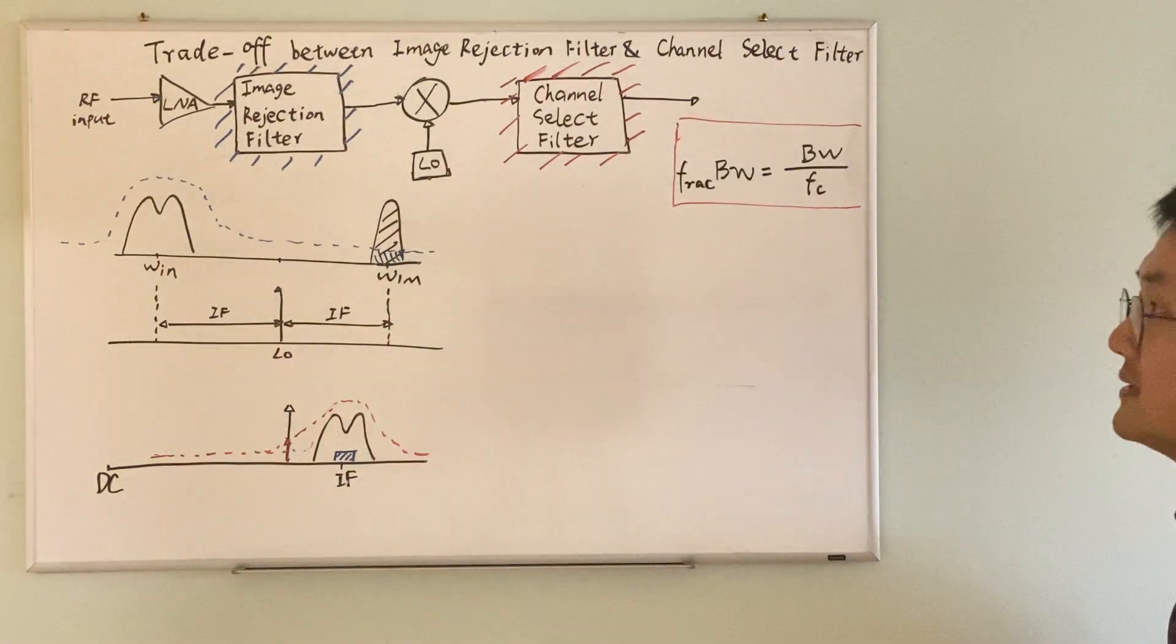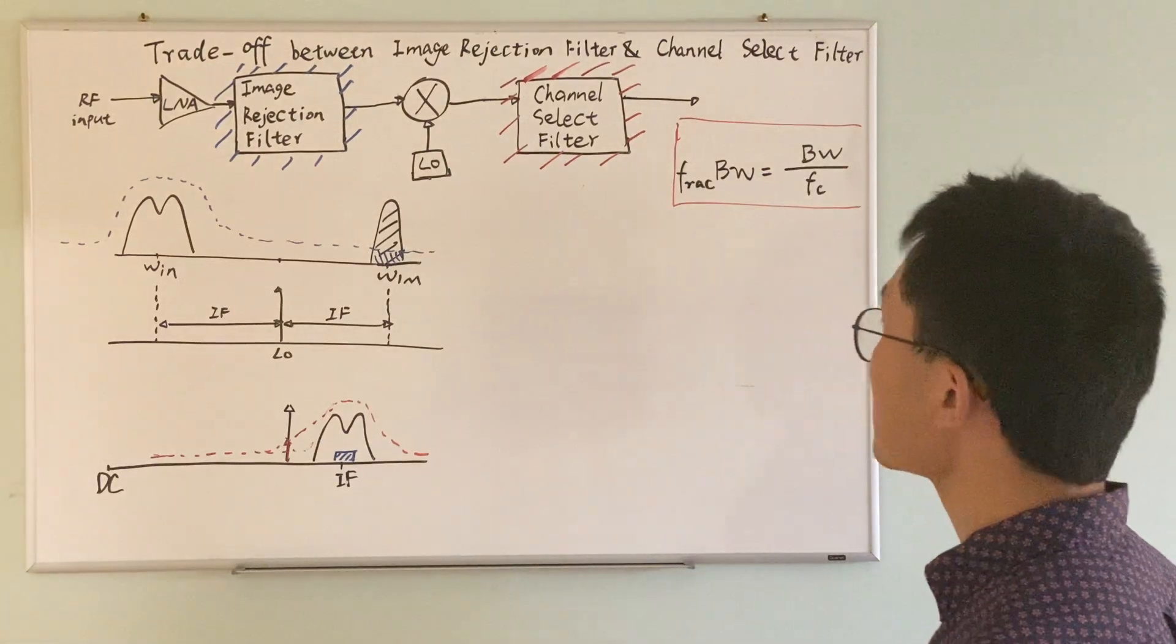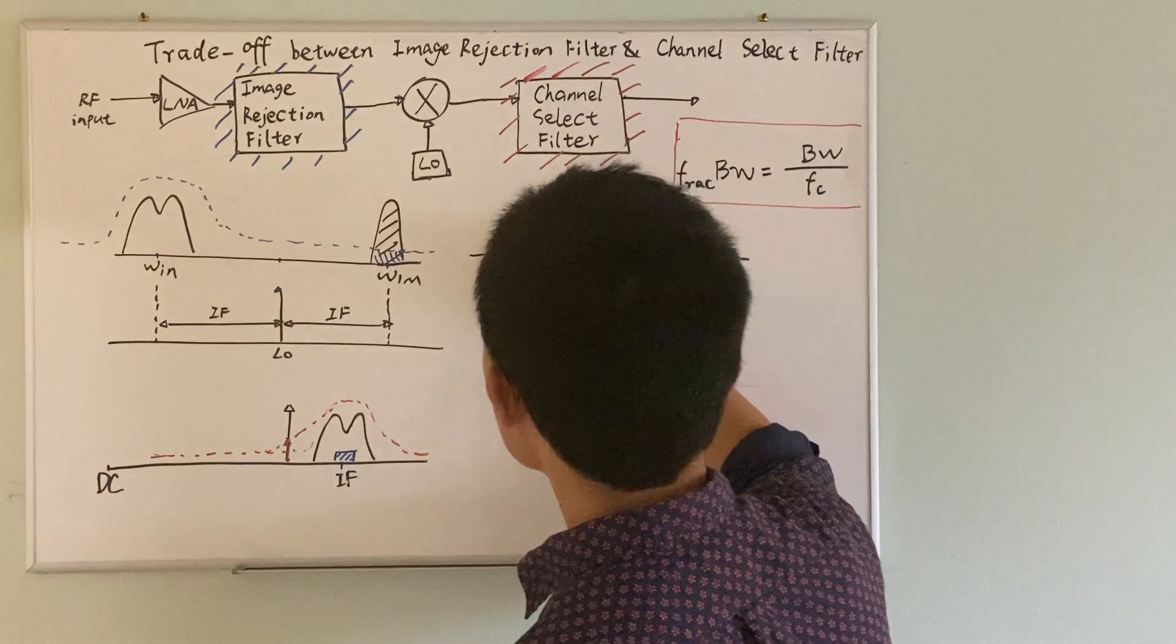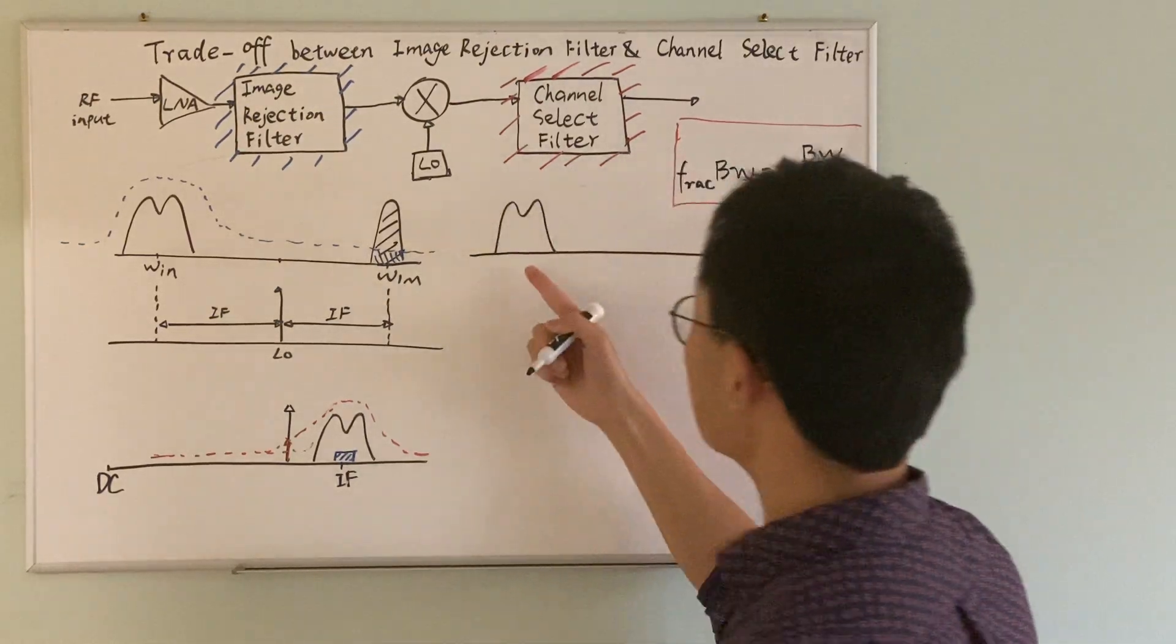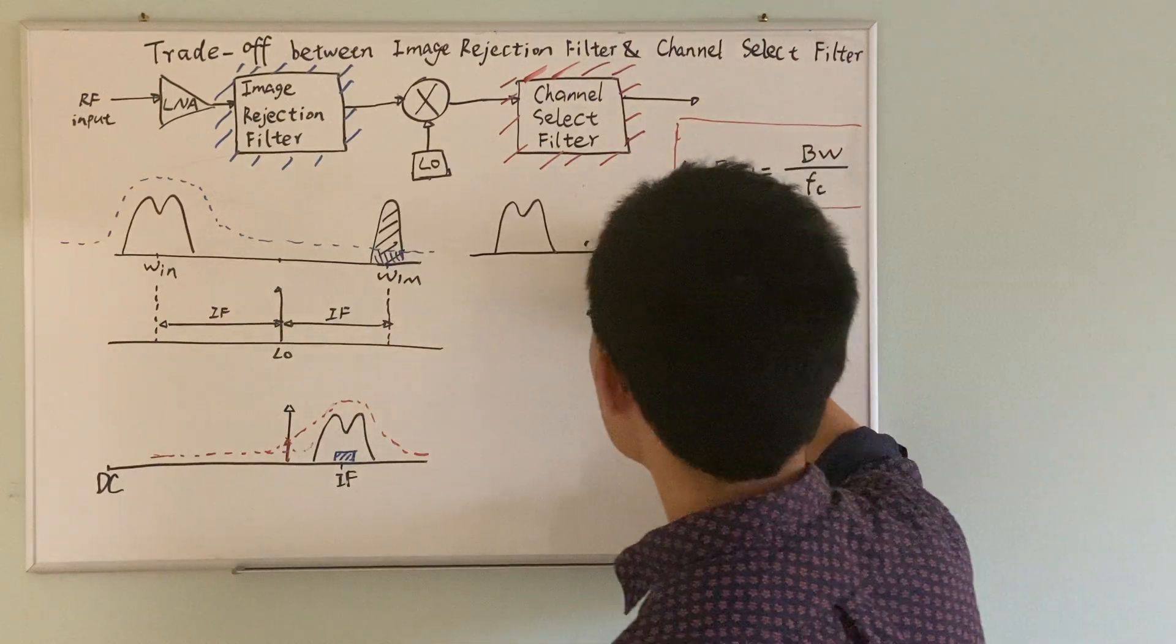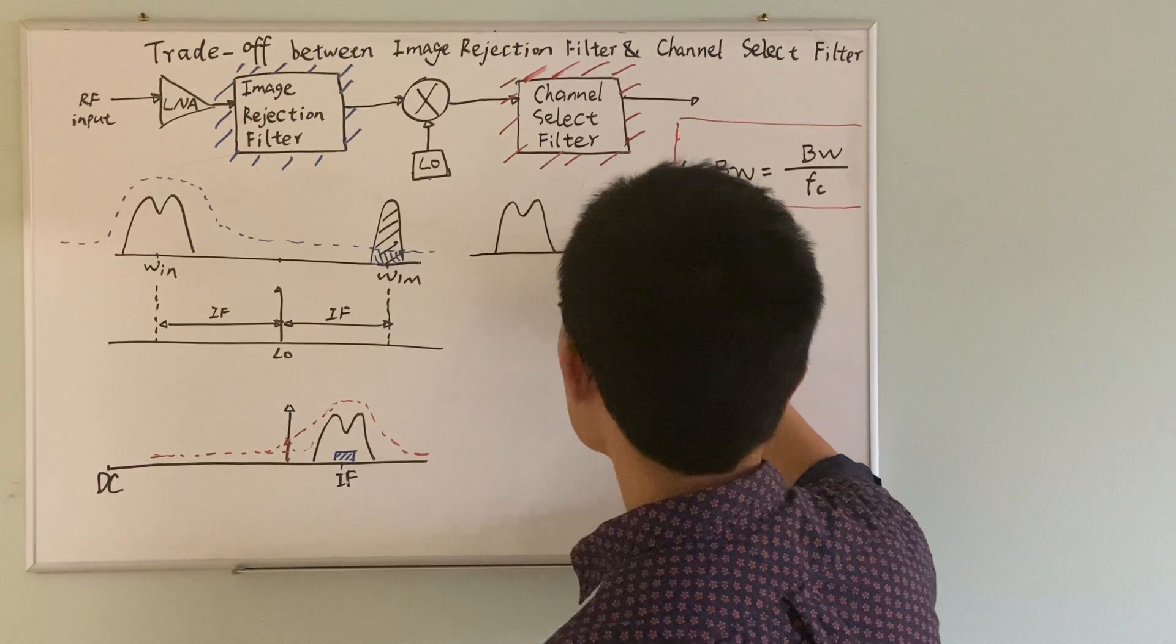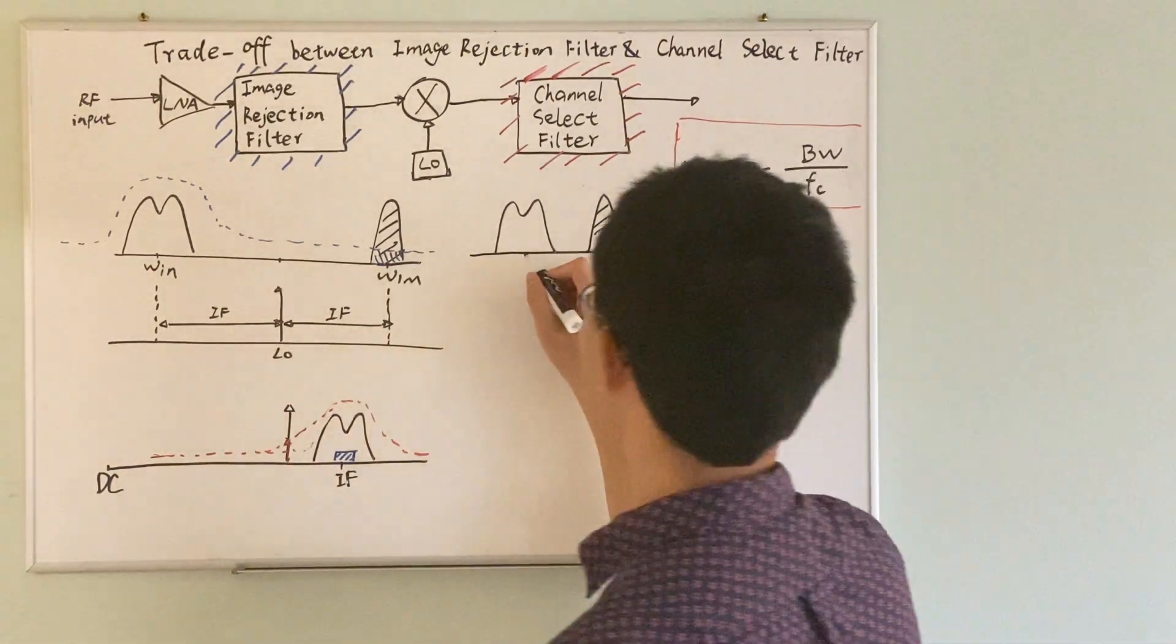Now let's consider a different scenario. In a different scenario, where similarly this is our useful information, and unlike the first scenario, the image and the useful information are really close to each other.